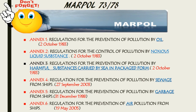In this video I will be talking about MARPOL, which is related to MEO Class 4 COSCO Pool oral. Under MARPOL we have six annexures: Annexure 1 - regulation for the prevention of pollution by oil; Annexure 2 - regulation for the control of pollution by noxious liquid substance; Annexure 3 - regulation for the prevention of pollution by harmful substance carried by sea in packet form; Annexure 4 - regulation for the prevention of pollution by sewage from ships; Annexure 5 - regulation for the prevention of pollution by garbage from ships; and Annexure 6 - regulation for the prevention of air pollution from ships. Under this video I will be talking about Annexures 1, 2, 4, 5, and 6.